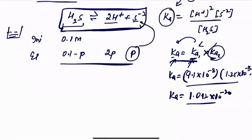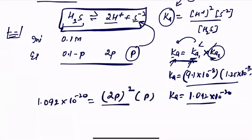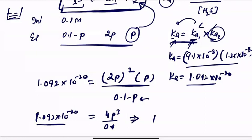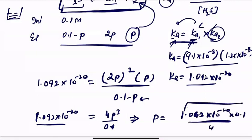Now apply this to find p — the sulfide ion concentration. For the first case (H₂S in water, initial 0.1 molar), at equilibrium H₂S = 0.1 − p, H⁺ = 2p, S²⁻ = p. So: 1.092 × 10⁻²⁰ = (2p)² × p / (0.1 − p). Neglect p compared to 0.1, giving 4p³ / 0.1 = 1.092 × 10⁻²⁰. Solve: p³ = (1.092 × 10⁻²⁰ × 0.1) / 4, then take the cube root to get your answer.